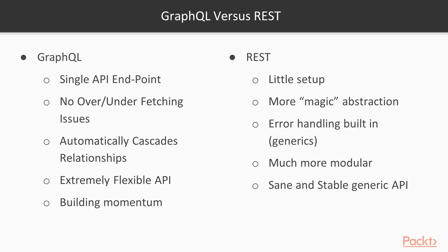With the examples provided, you can see that GraphQL provides a much more flexible API than REST. With cascading relationships, the removal of under and over fetching issues, and a single API endpoint — coupled with the fact that GraphQL isn't just an API but also a query language — GraphQL is easily more flexible than REST. The one downside is that GraphQL isn't as well known right now. It was only released in 2013, while REST has been around significantly longer, so REST is much more well known and some developers may not have heard of GraphQL.